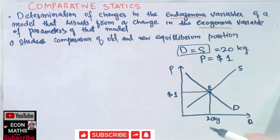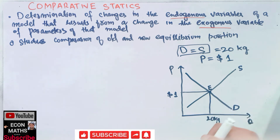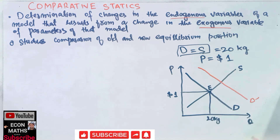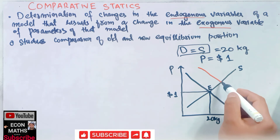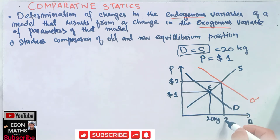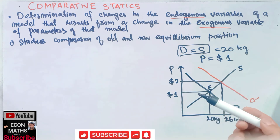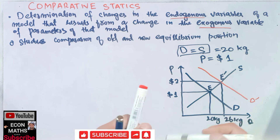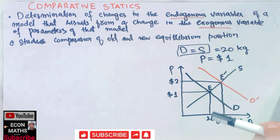Now suppose demand increases by 6 kg due to some exogenous factors, while supply remains the same. This means there will be a shift in the demand curve to a new demand curve D'. After the shift, the new equilibrium price is two dollars and we demand 26 kg of onions. This is the new equilibrium.